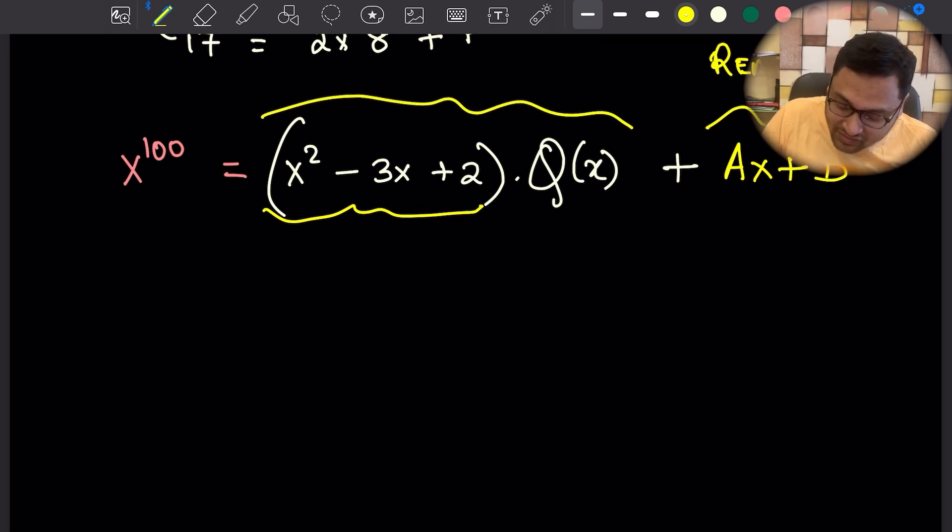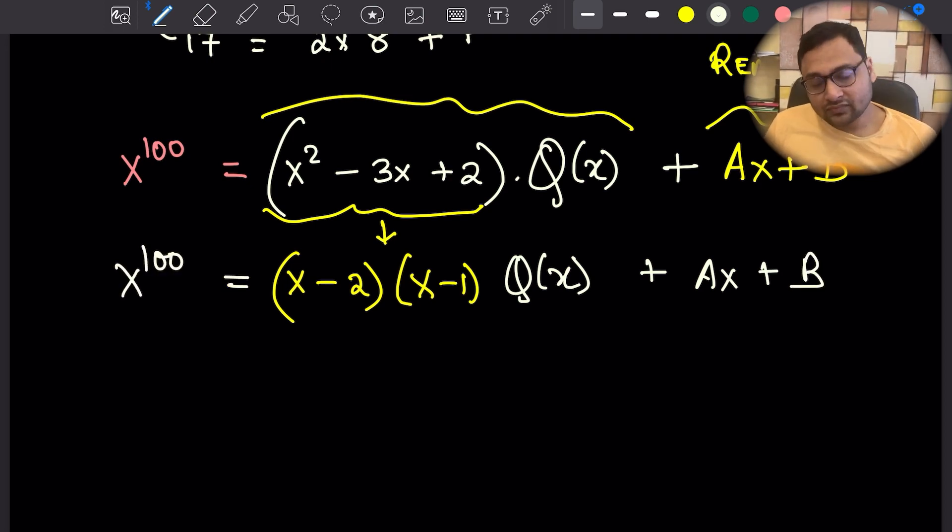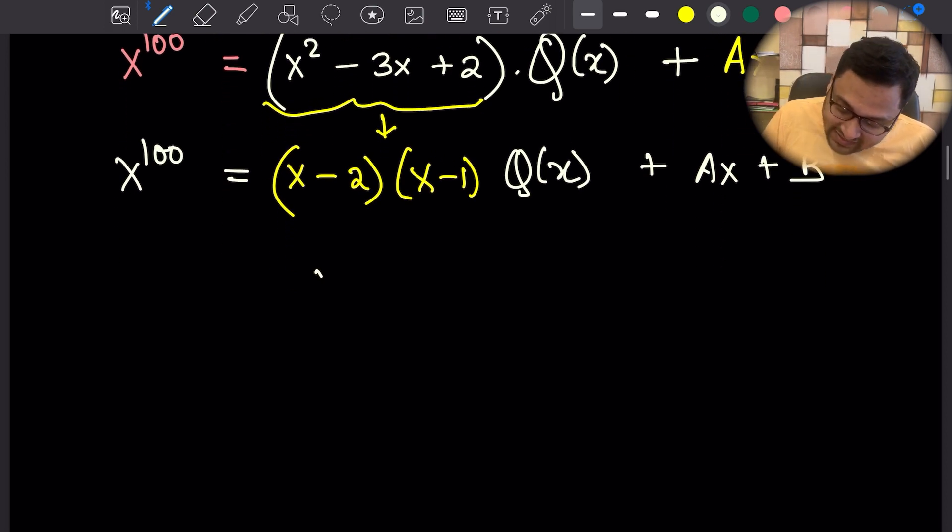If you do that, you will get some equations in a and b, and then you can solve for a and b. X squared minus 3x plus 2 can be factorized as (x minus 2) times (x minus 1) times the quotient plus ax plus b equals x to the power 100.